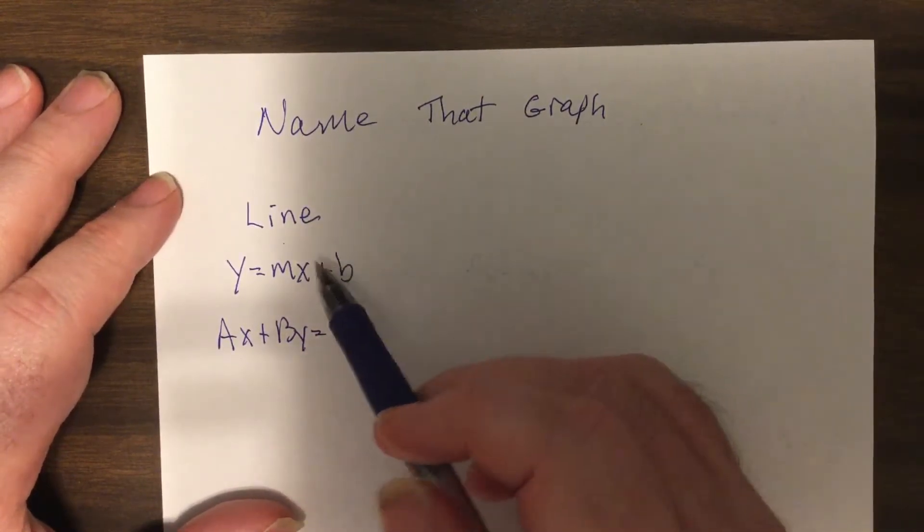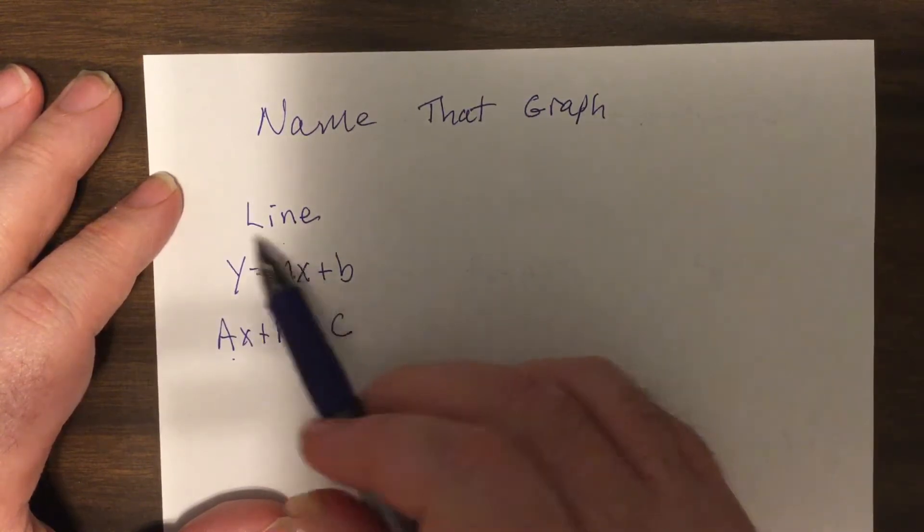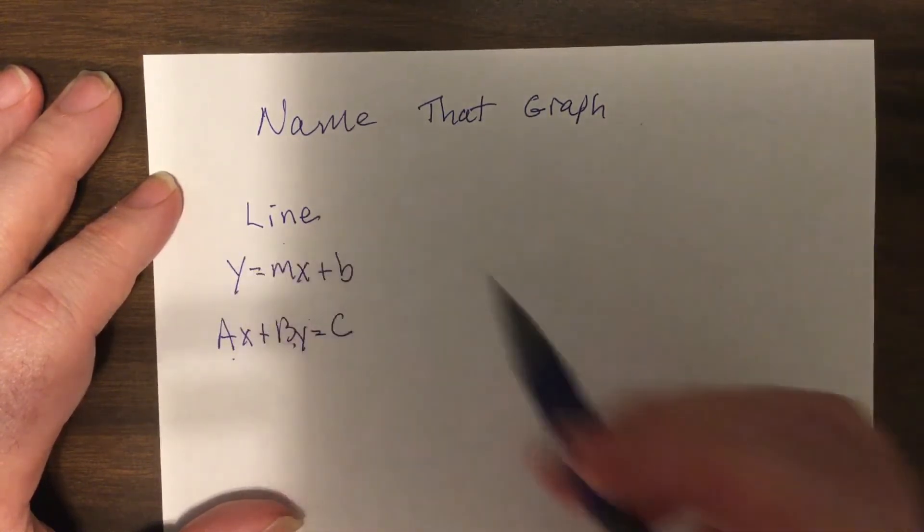or what's called standard form. Either way, when the x and y are on the same side, the powers are one. So if I subtracted mx, it'd still have powers of one.